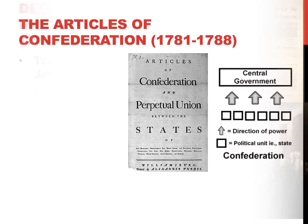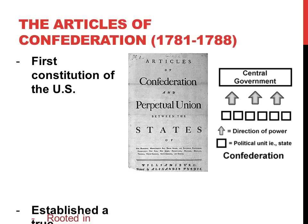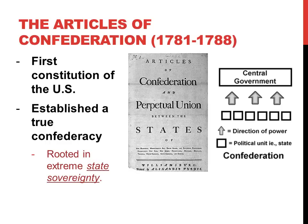Upon achieving their independence, the 13 former British colonies set to work on their first written constitution. They called this the Articles of Confederation, in which they set up a confederation that would give strong state sovereignty and limit the power of the national government.